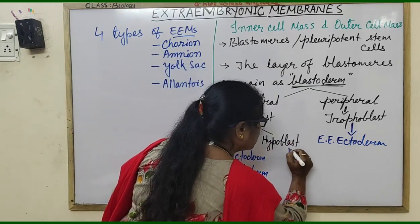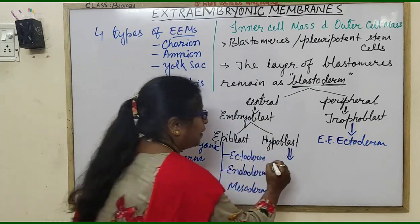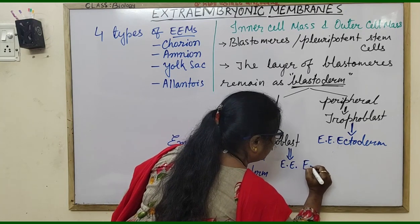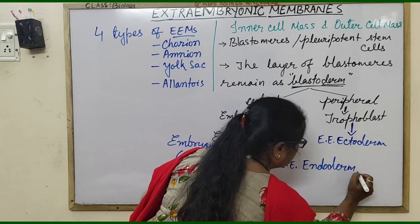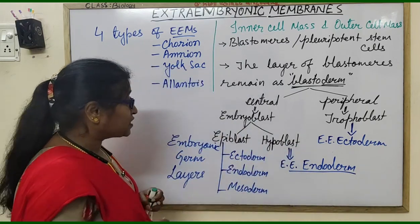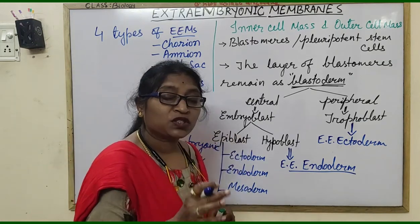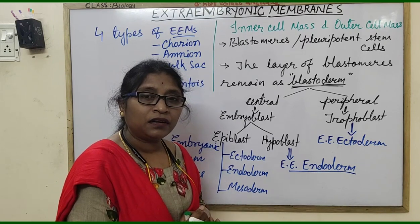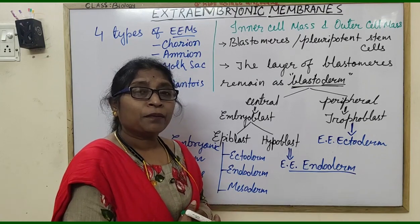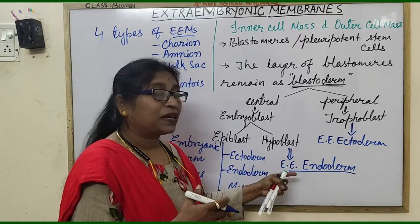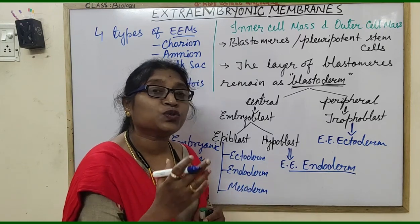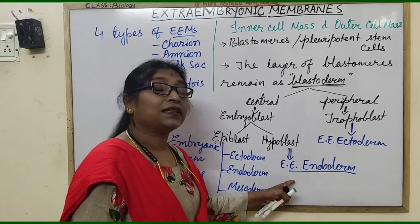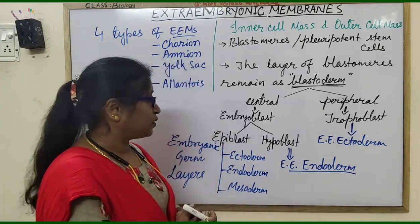The hypoblast gives rise to the extra-embryonic endoderm. The blastomeres of the hypoblast proliferate, differentiate, and move into the blastocoele, completely covering it when differentiated into squamous cells. These squamous cells form the primitive endoderm, which is nothing but the extra-embryonic endoderm.